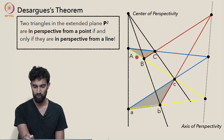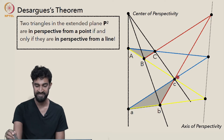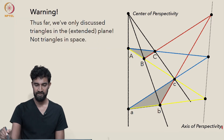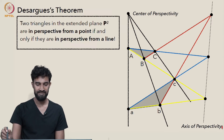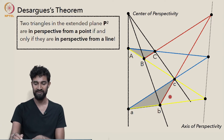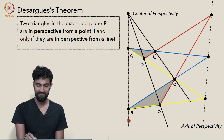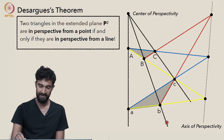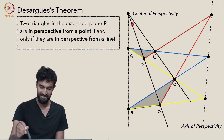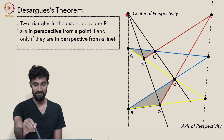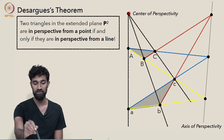Here's an image of two triangles in perspective from a point. Desargues' theorem says they're also in perspective from a line — if we draw corresponding sides, extend them, the points of intersection will be collinear. Similarly, if we start with triangles in perspective from a line, the lines AA, BB, and CC will be concurrent at a single common point.